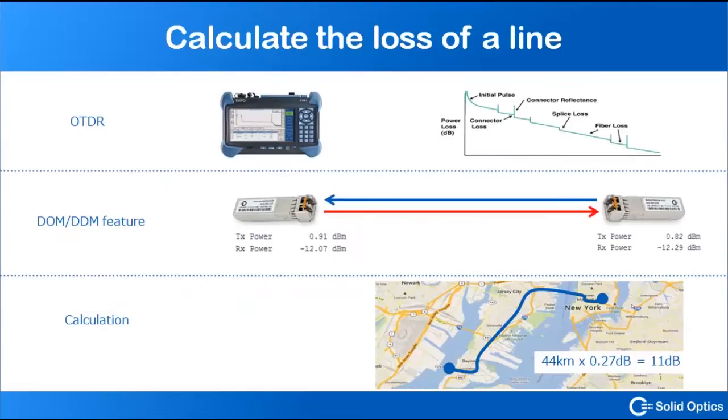If you want to calculate what your loss of the line is, you can do that with different techniques. You can use an OTDR. With an OTDR you can see exactly what the loss of line is, and you can also see the patches on your dark fiber. Another way of doing this is putting optics with DOM features on both sides and just calculate it. In Cisco you can use this DOM feature. You can see the power on the transmitting side, so this is for example 0.91 it's sending out, and it's receiving with minus 12.29, and the other is around the same.